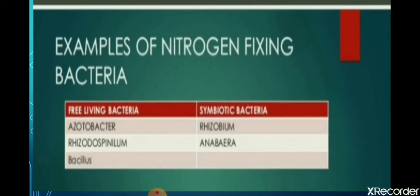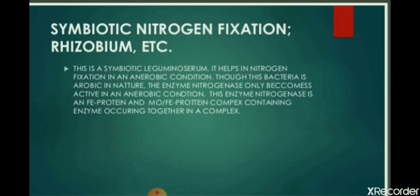Nitrogen fixation is carried out naturally in soil by microorganisms. These microorganisms are divided into symbiotic and free-living bacteria. Some nitrogen-fixing bacteria have a symbiotic relationship with plant groups, especially legumes. These bacteria fix nitrogen in anaerobic conditions. The best example is rhizobium. Examples of free-living bacteria include cyanobacteria, azotobacter and clostridium.